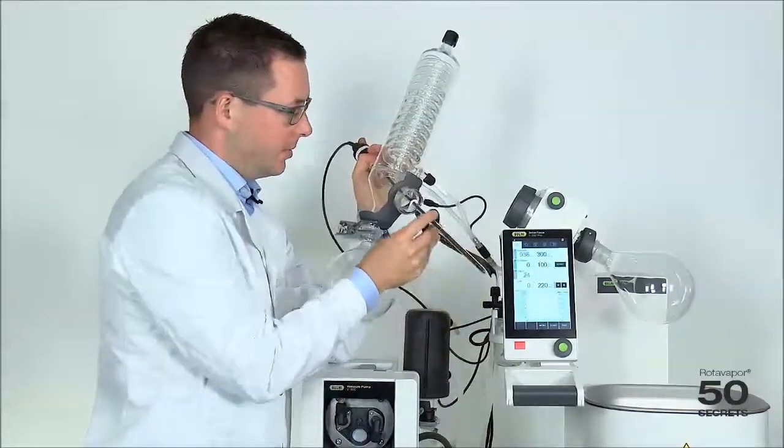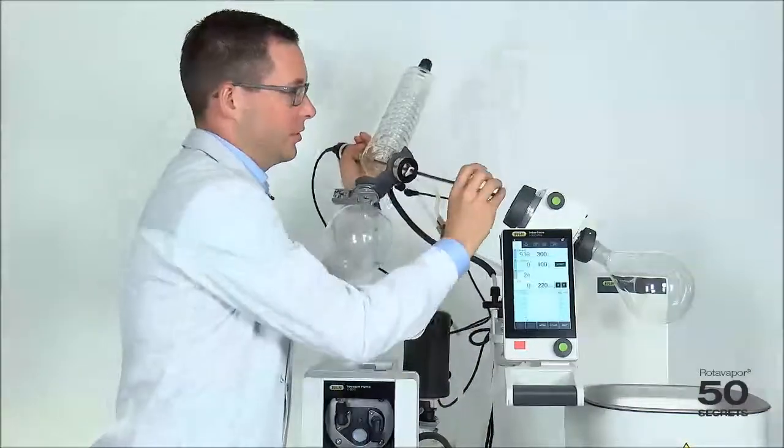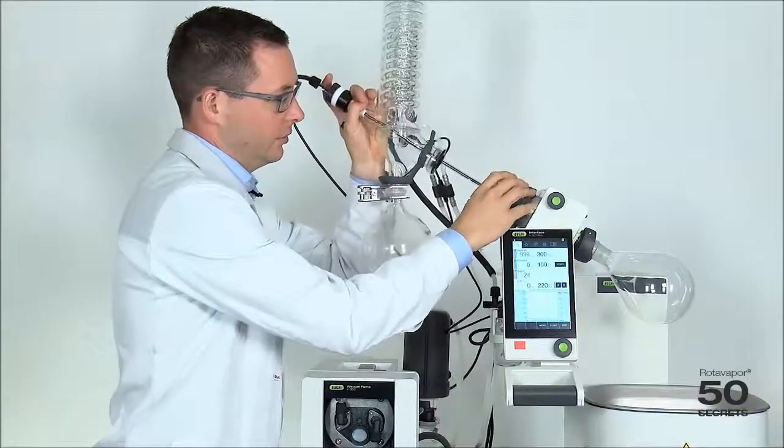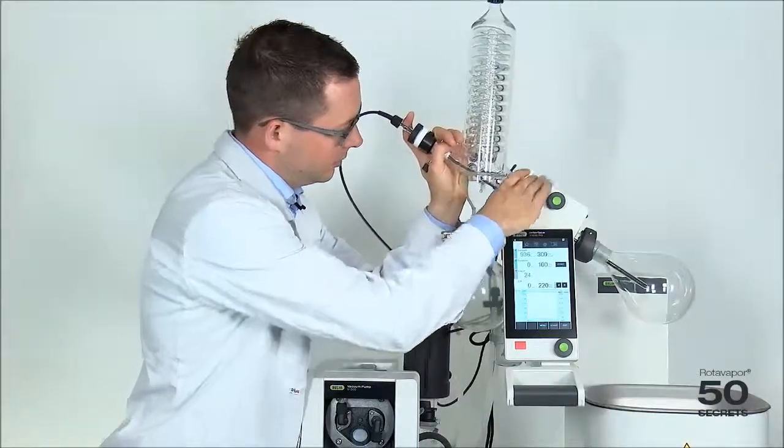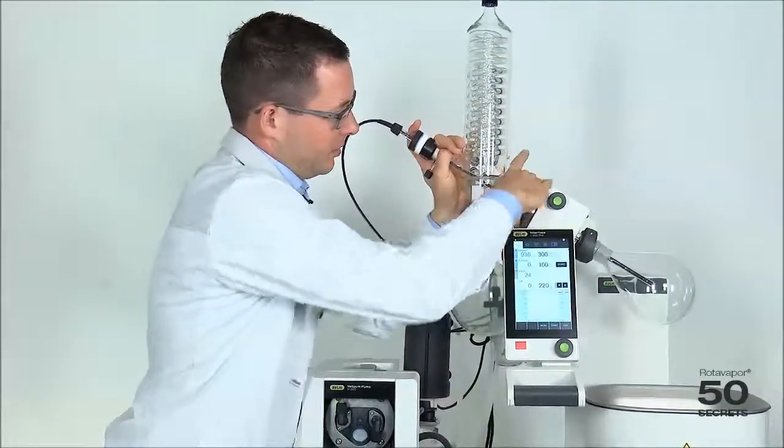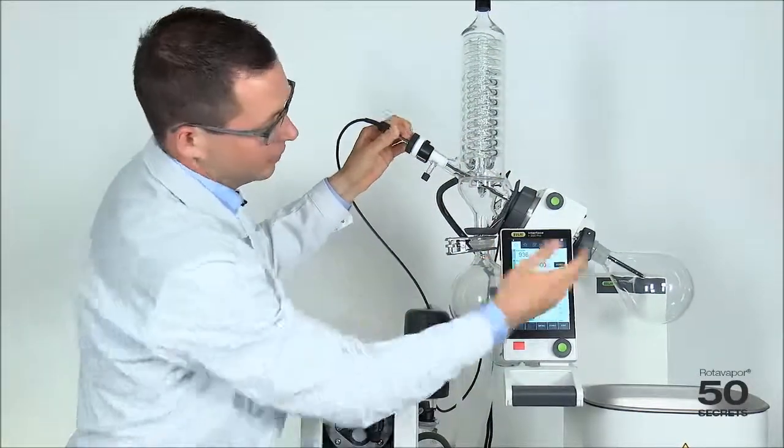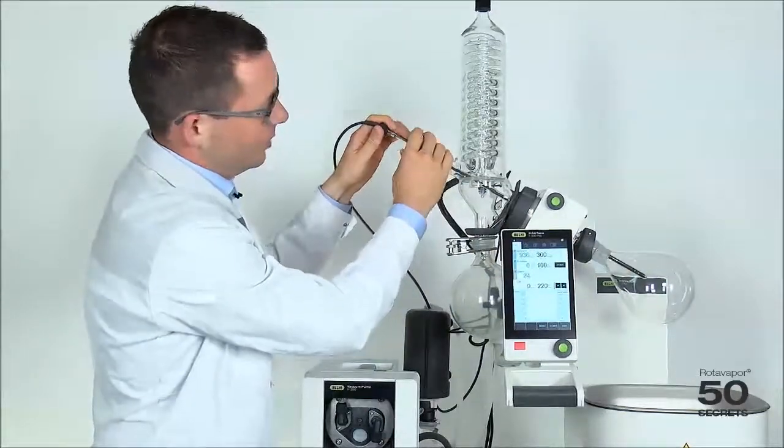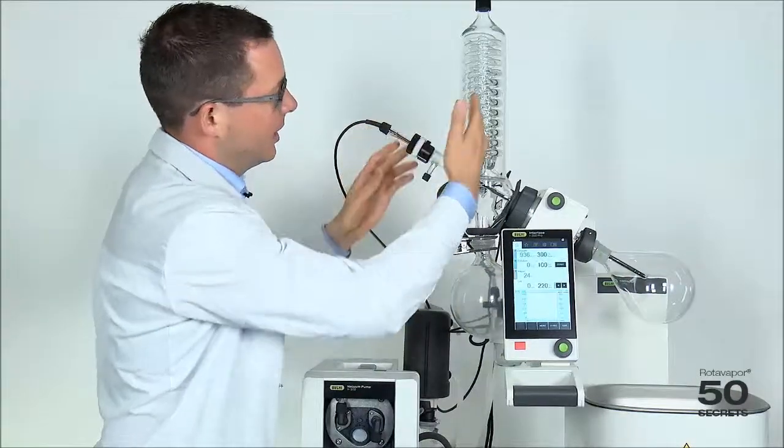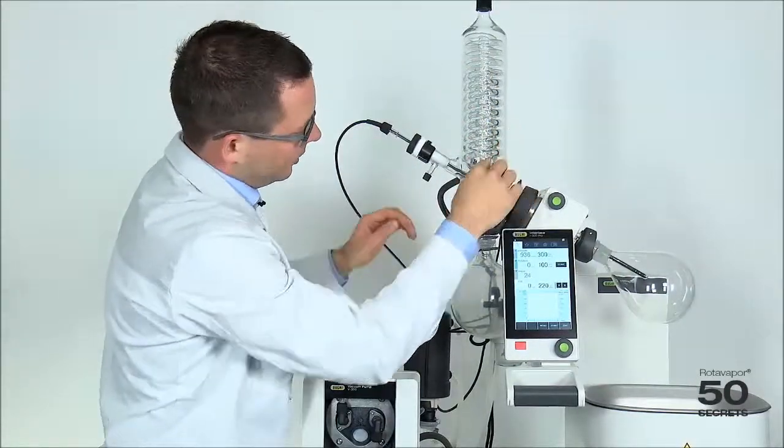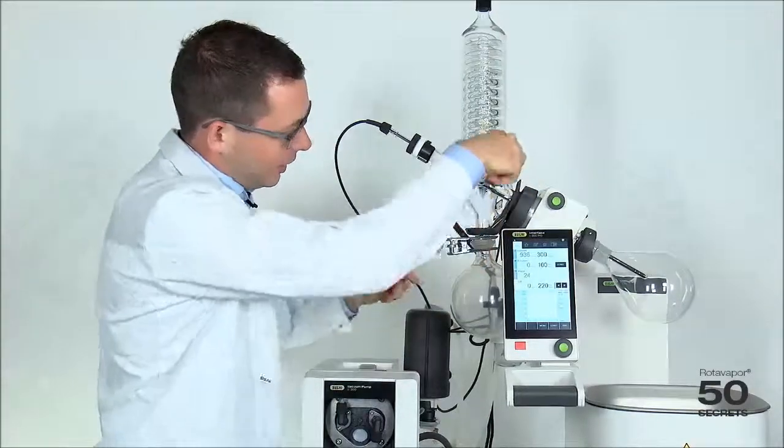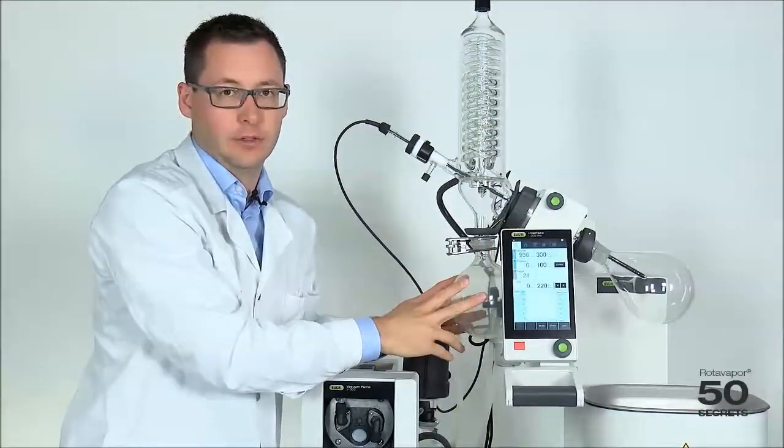We put the sealing back on. We insert this back into here like that. We tighten and now we can move this up just slightly so we have the right position. We fix it and now all the droplets which form will go to the drain disc and then drop down into the receiving flask.